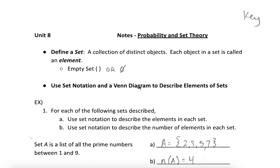In this video, I'm going to be introducing some set notation and the concept of probability. So to start off with, we've got to understand what a set is. It's just a collection of distinct objects, and each object in that set is called an element. So anything that you group up — it could be a group of numbers, letters, objects, people — anything that you collect in a group, we could define as a set.